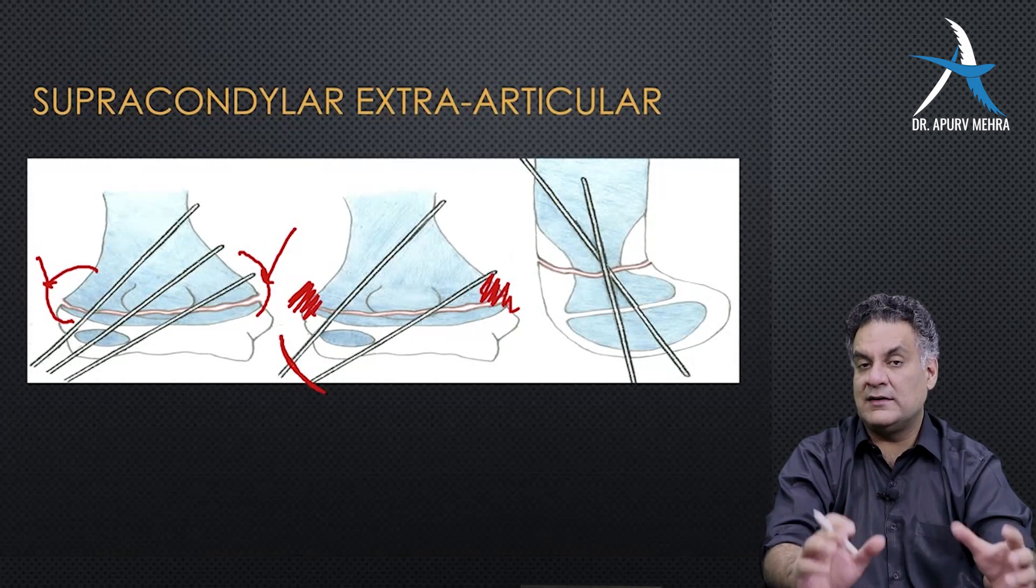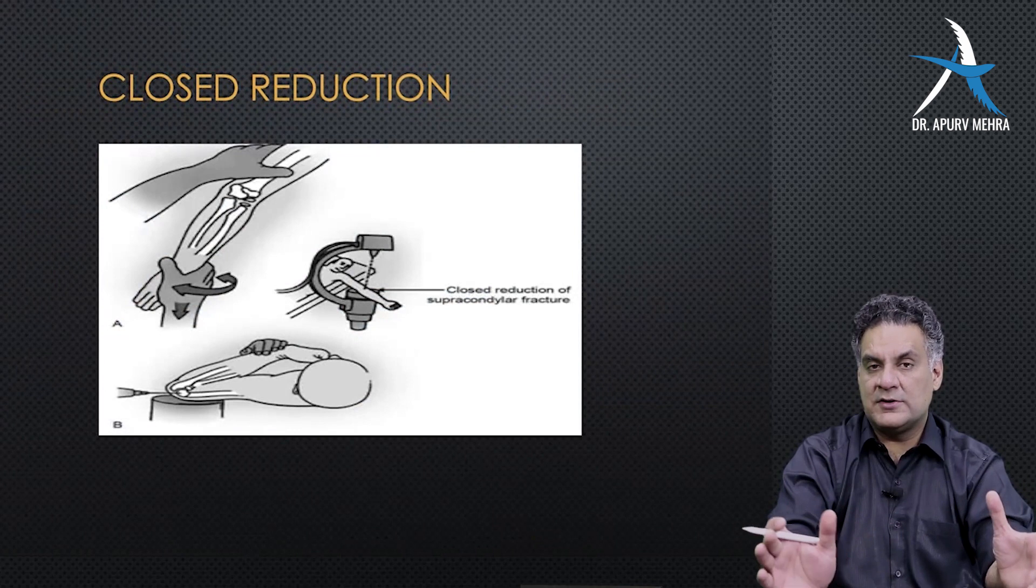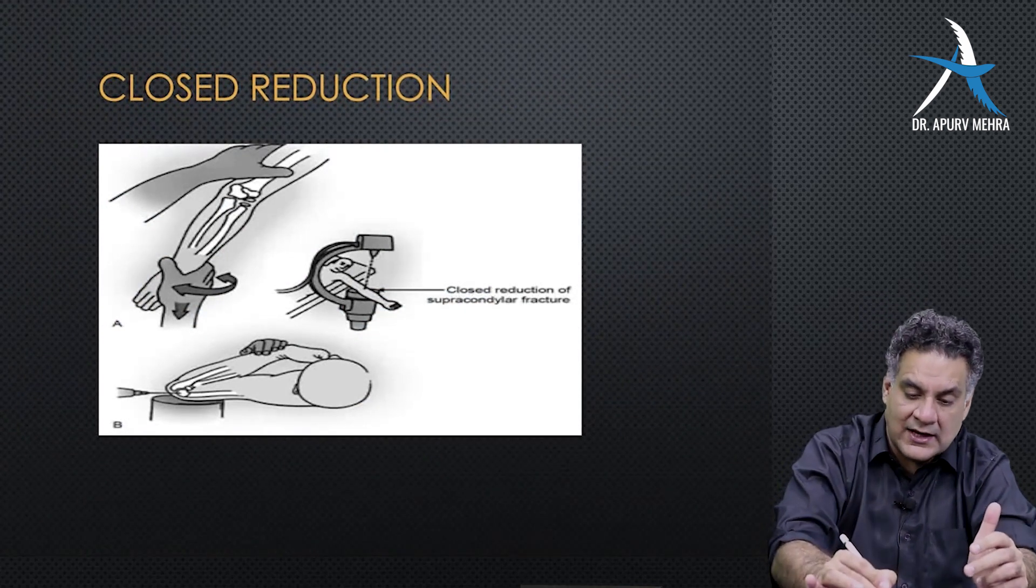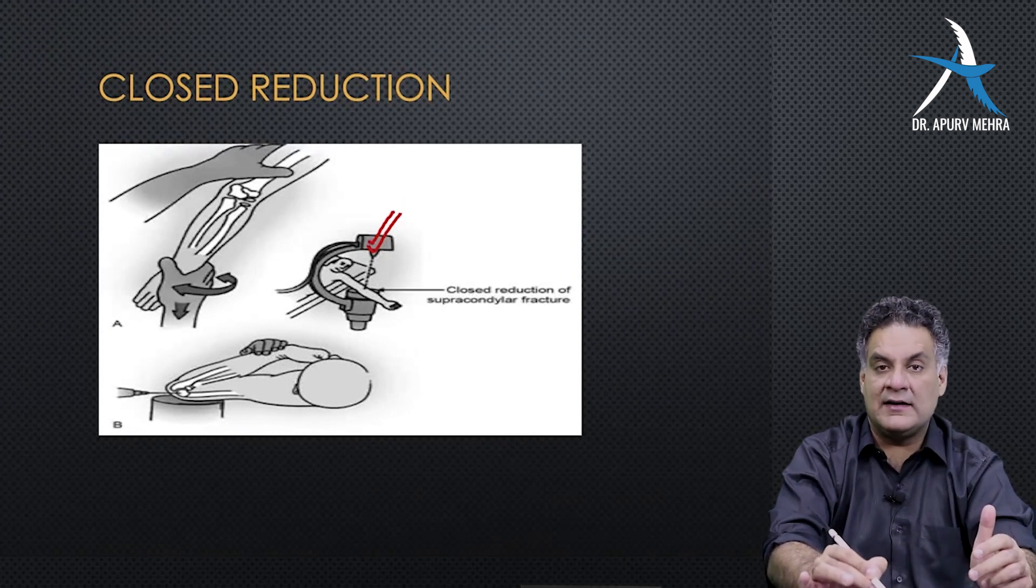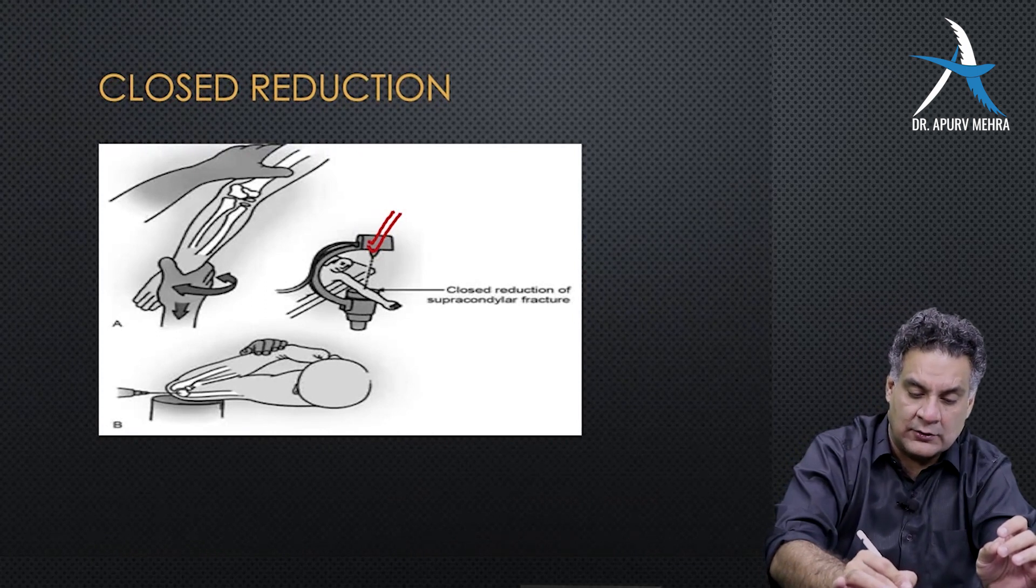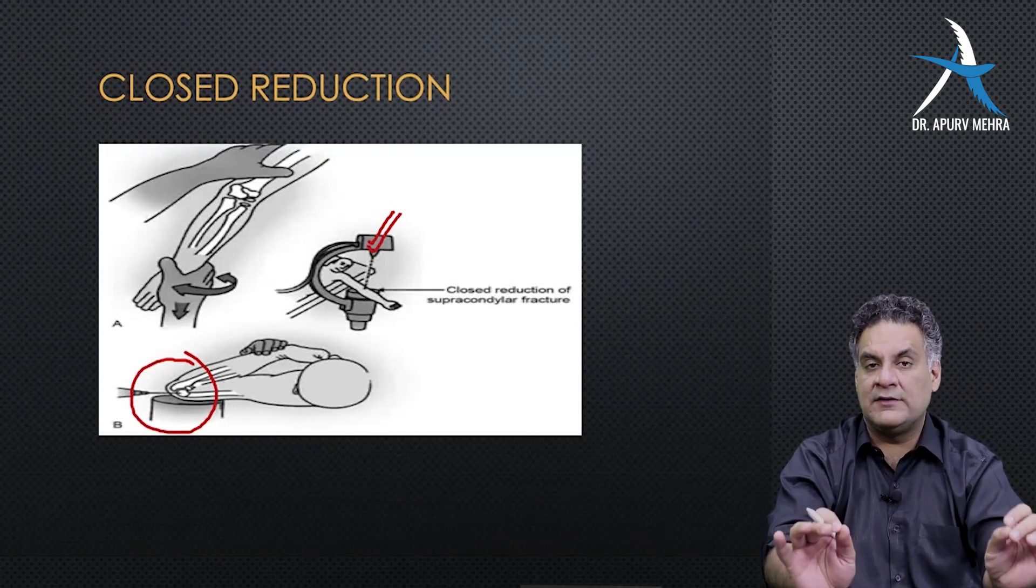Extra-articular injury means away from the joint. Close-reduced. Take the patient to operation theater, give anesthesia, apply traction. Check under the C-arm or image intensifier if the reduction is satisfactory or not. And under X-ray control, put the wire. Closed reduction internal fixation.